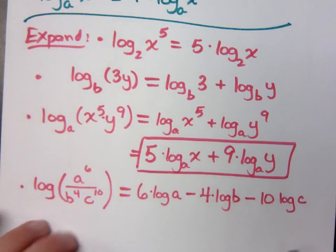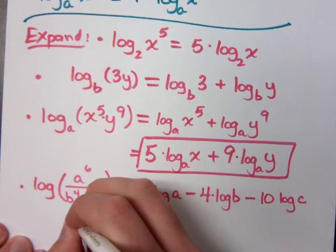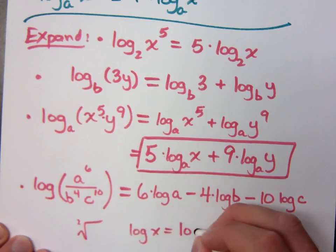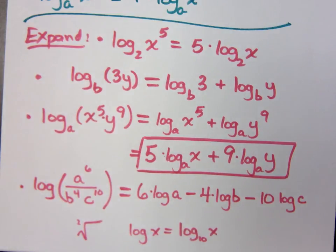Notice what's different about the log written here — there's no base. When there's no base written, it's understood to be something, just like when you write the square root symbol with no index, it's understood to be 2. If you just write log of x, it really means log with base 10 of x. If you look at your calculator, there's a button that says log, and that's understood to be base 10.